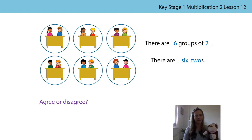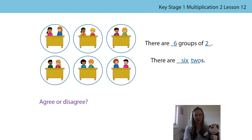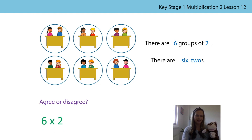Do our stem sentences represent the picture that we can see? They do, because we've got one two, two twos, three twos, four twos, five twos, six twos — or six groups of two. So the multiplication expression is six times two. The six represents the number of desks or the number of groups, and the two represents the number of children sitting behind each desk. Did you get the same multiplication expression? Well done.